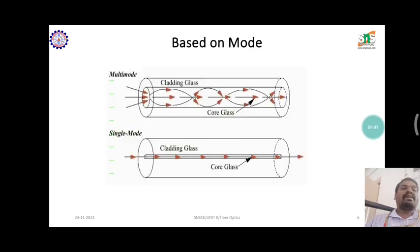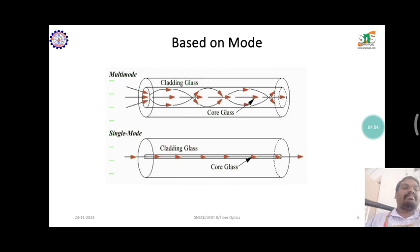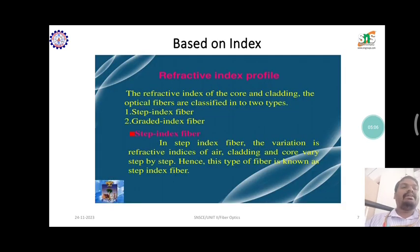Based on mode, multi-mode means a lot of light rays traveling in a single line. Single-mode means a single ray traveling in a single line. This is the difference between multi-mode and single-mode fiber. The refractive index method has two types: step index fiber and graded index fiber.